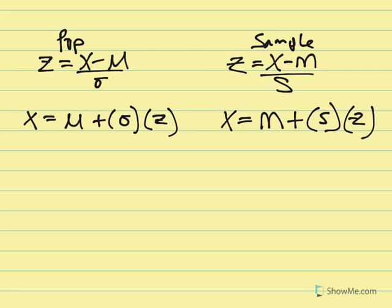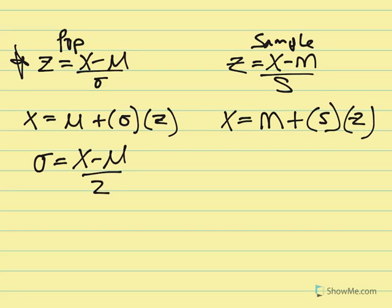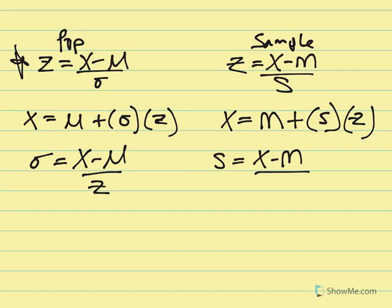In some cases we may be asked to solve for standard deviation using algebra. If we take the mean deviation and divide by Z, what's left over is the standard deviation of a population. Similarly, for a sample, s equals the mean deviation divided by the Z-score. Dividing the mean deviation by the Z-score tells us how much each standard deviation equals for a particular distribution.